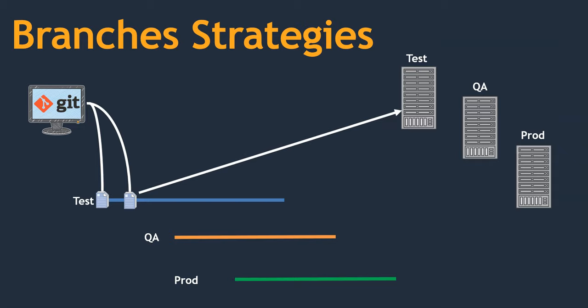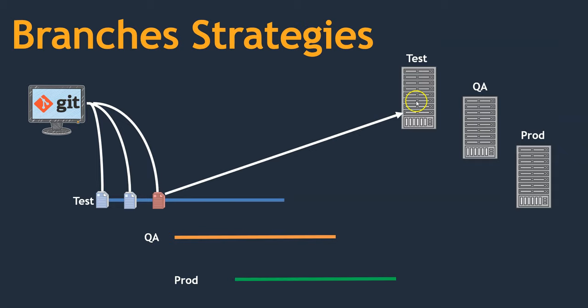Again I can push that fixed code onto the test branch. We deploy it — but this is also not working. We enhance the code again and push it onto the test branch once more. Now whatever code we have pushed, we deploy it, and this time the code is working fine.